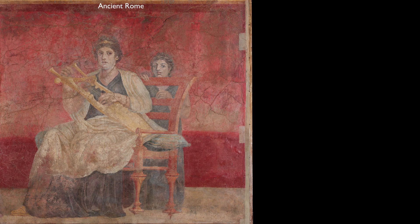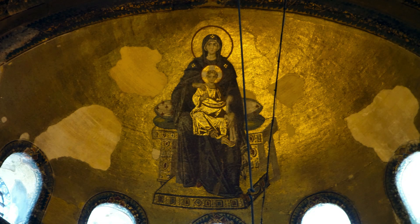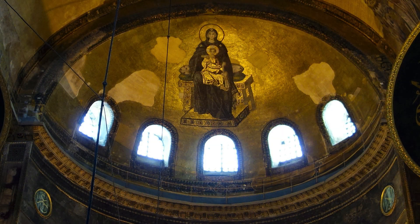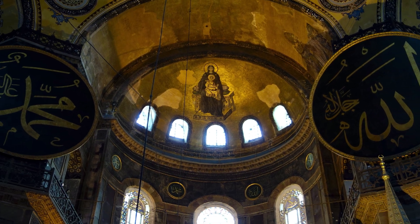The artist of the ancient Roman fresco was doing everything he could to convince us of the reality of his illusion. Here in the Middle Ages, the artist is doing everything he can to convince us of the unreality of his image. He has removed it from any earthly setting with that gold background. The figure is elongated and the drapery is very abstracted — removed from reality. The lengthening of the body signals to the viewer that this figure exists in the spiritual realm, not in daily life. Christians at this point in history are much less concerned with the physical realm and much more focused on the spiritual hereafter.